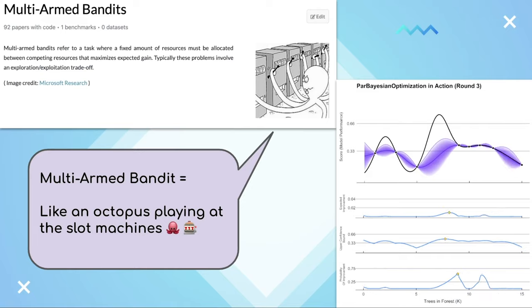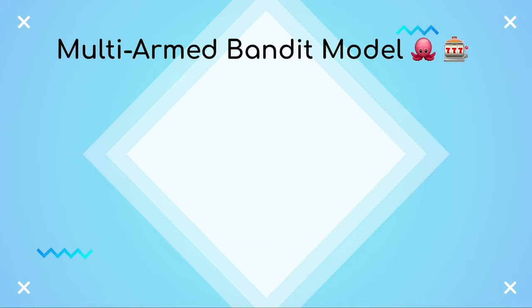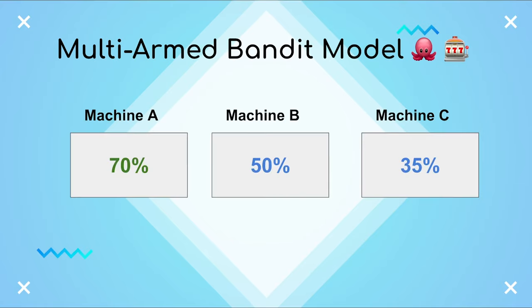Now, if your eyes glazed over from all those terms, don't worry, we'll break it down. You can think of bandit optimization as an advanced form of brute forcing. Axe will put resources behind every possible option and then reroute resources depending on how much progress each option is making.